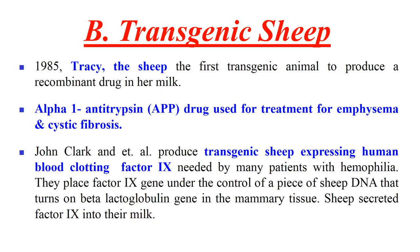The next transgenic animal is the transgenic sheep. In 1985, Tracy the transgenic sheep was the first transgenic animal to produce a recombinant drug in her milk. The alpha-1-antitrypsin drug, used for the treatment of emphysema and cystic fibrosis, was introduced into that sheep. John Clark and his team also produced a transgenic sheep that expresses blood clotting factor 9, which is required by patients suffering from hemophilia.